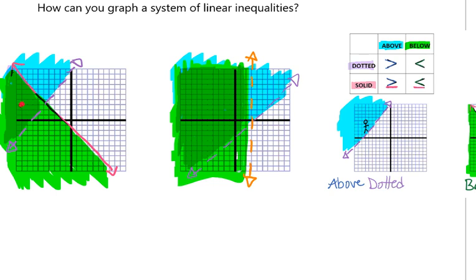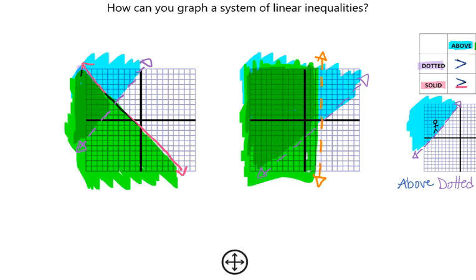It has to be something that's inside both of the colored areas. Now if I have a solid line, it could be on the line of both of those, but it could not be on the dashed line. That wouldn't work. That would not be a solution.